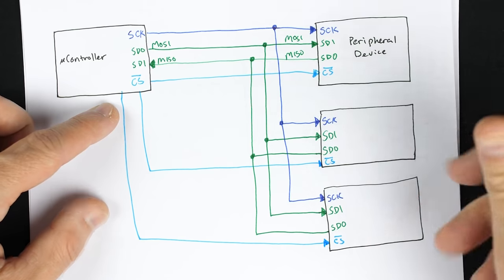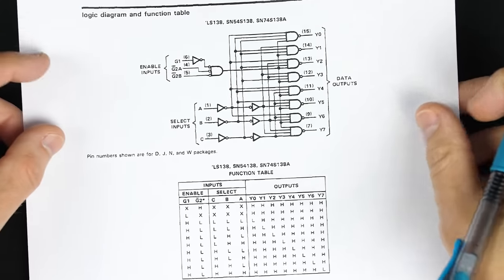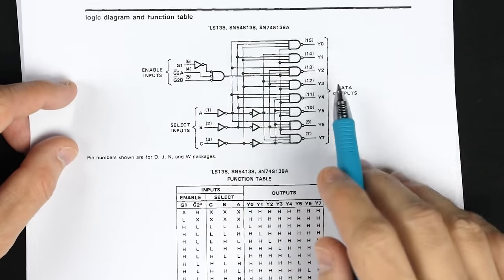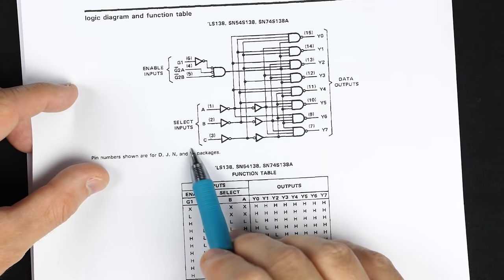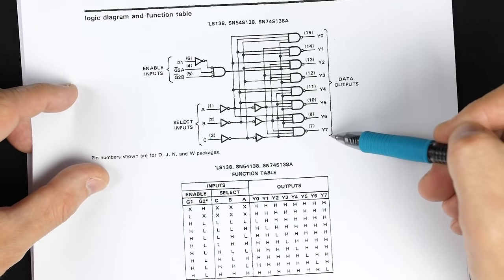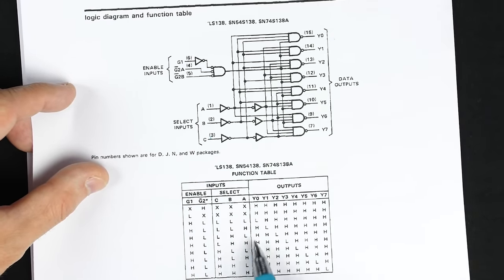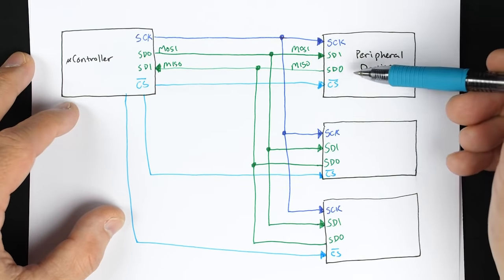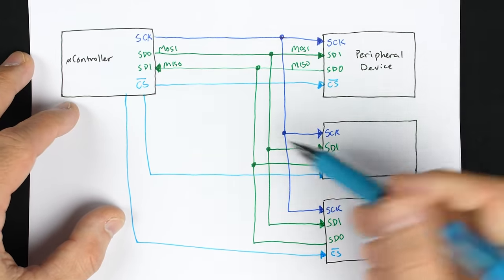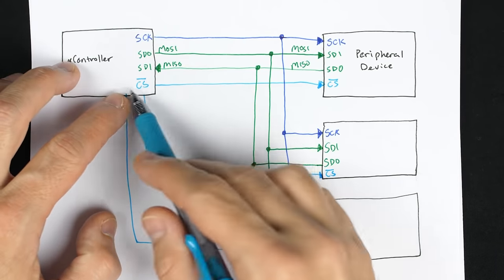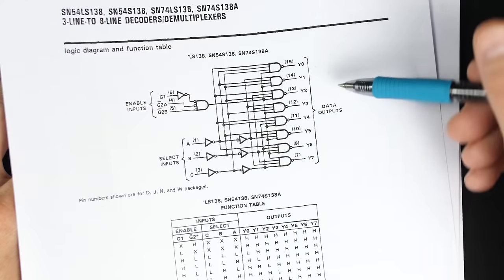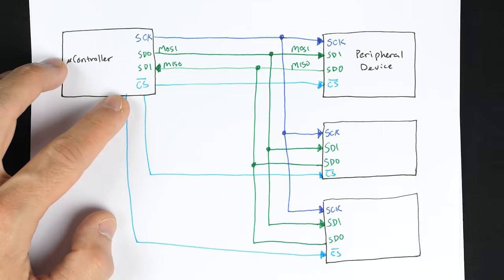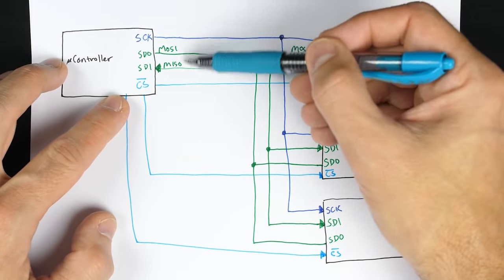If you have a lot of devices, you could use a decoder like the 74LS138, which has three inputs and eight outputs. Based on the value of the three inputs, you get one and only one output set low at a time — which works perfectly for this active low chip select where you want one and only one device selected at a time. You could use three pins on your microcontroller to control up to eight different devices, then share the clock and two data lines.